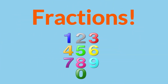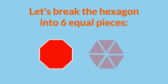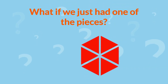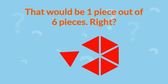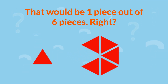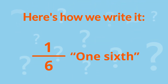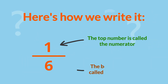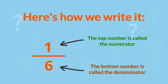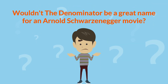Fractions are for counting a part of something. Let's break the hexagon into 6 equal pieces. What if we just had 1 of the pieces? That would be 1 piece out of 6 pieces, right? Here's how we write it: 1 sixth, 1 over 6. The top number is called the numerator and the bottom number is called the denominator. Wouldn't the denominator be a great name for an Arnold Schwarzenegger movie?